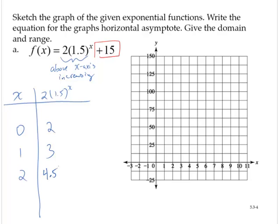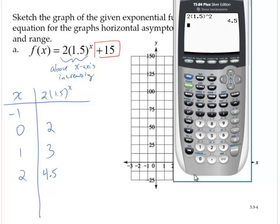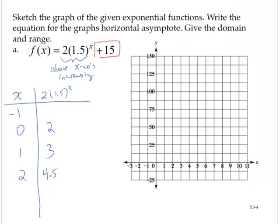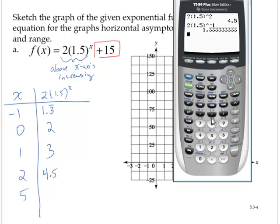Now let's choose a couple of other values. How about we let x equal negative 1. If x is negative 1, we would have 2 times 1.5 to the negative first power. And that ends up being 1.33, 1.3 repeating. And how about a larger value for x? How about we let x equal 5. So then I would have 2 times 1.5 to the fifth power. That ends up being 15.1875.